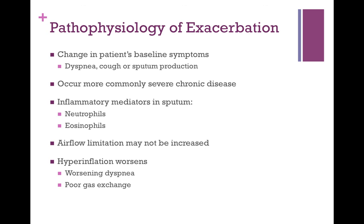An acute exacerbation of COPD is essentially a change in symptoms from baseline. Patients will have an increase in dyspnea, cough, or sputum production, and this may occur more commonly in patients with severe disease. In the pathophysiology of an acute exacerbation, inflammatory mediators in the sputum include both neutrophils and eosinophils — unlike chronic COPD alone, where eosinophils are not typically present. Airflow limitation during exacerbation may not be increased; however, hyperinflation worsens, causing worsening dyspnea and poor gas exchange.